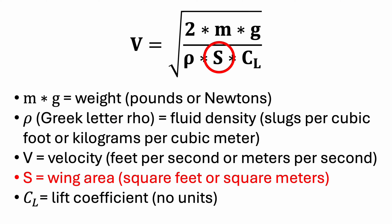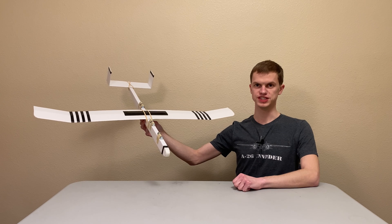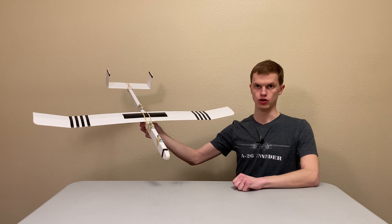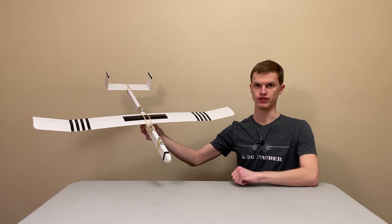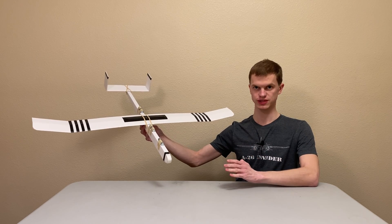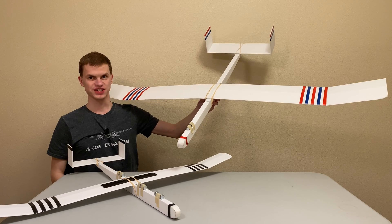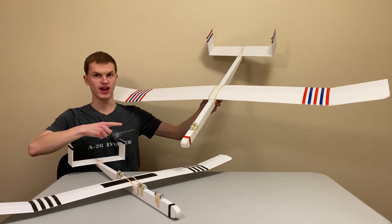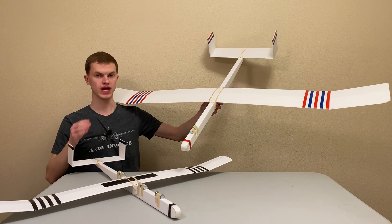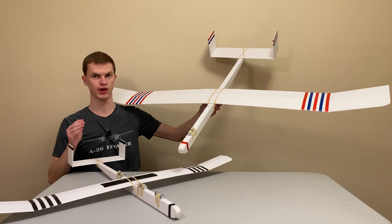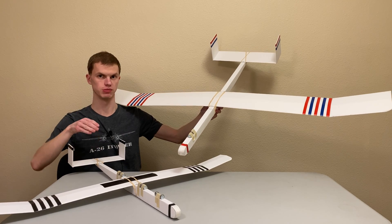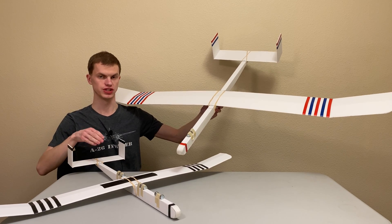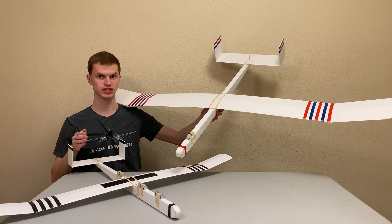The next variable we'll look at is the area of the wing. In this demonstration, we'll first use this plane that has a wing area of 160 square inches. Next, we're going to be using this large glider that has a wing area of 360 square inches. I've added more weights onto the small plane so that each glider weighs the same amount.